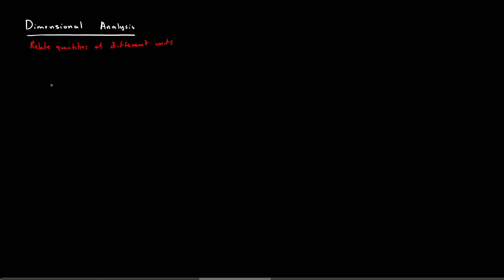You can think of dimensional analysis almost like multiplying fractions. If we take the expression 3 over 4 and multiply that by 1 over 3, we can cancel out the 3s in the numerator of the first fraction and the denominator of the second fraction, because we're dividing 3 by 3, which becomes 1 to 1, giving us an answer of 1 fourth. The same thing applies to units — for example, canceling centimeters in numerator and denominator leaves us with a value in the form of kilometers over meters.